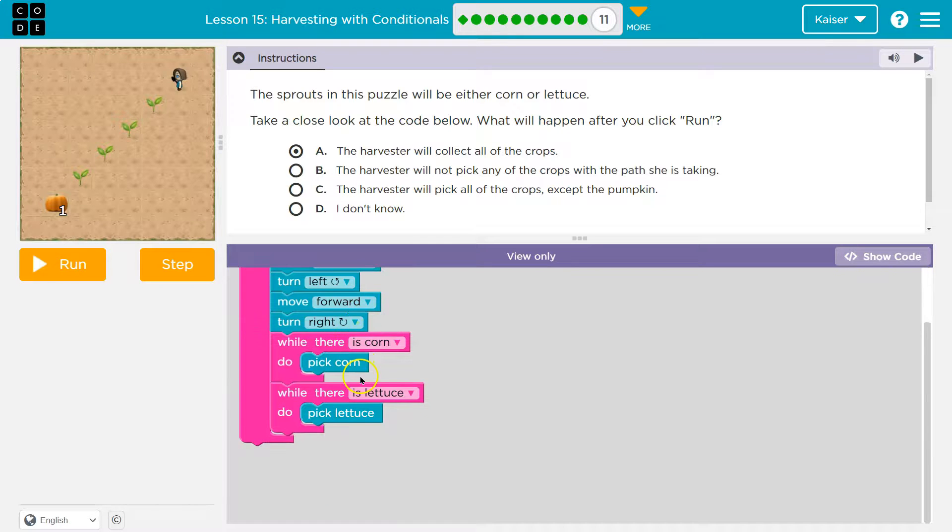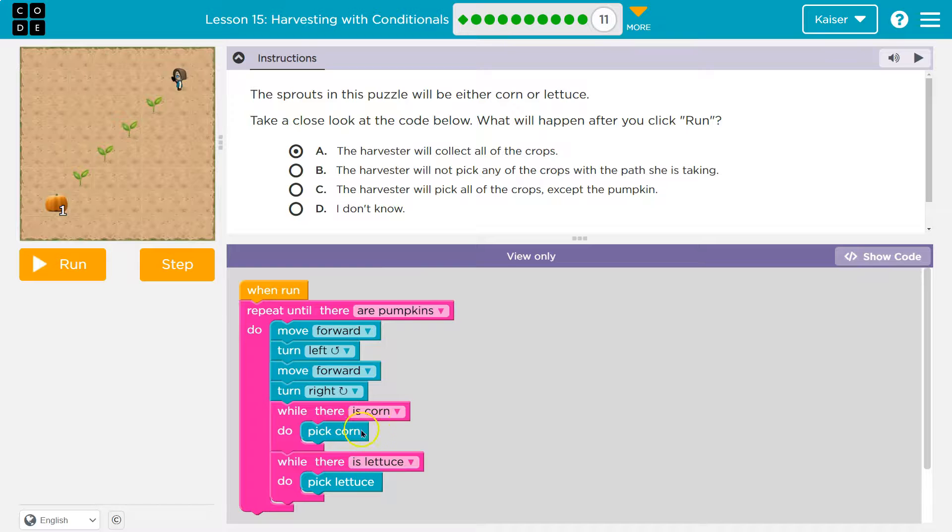Repeat until there are pumpkins. Do you see anywhere? If you need to pick a piece of corn, look at this. If you need to pick some lettuce, boom. But what happens when I get to this pumpkin? Do you see a block that we might need?